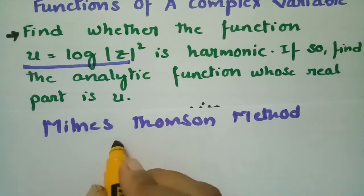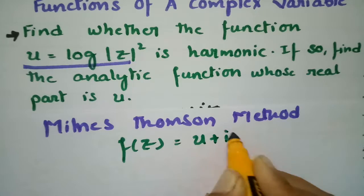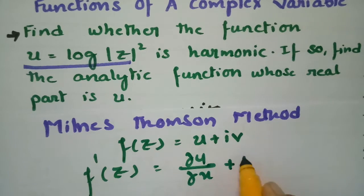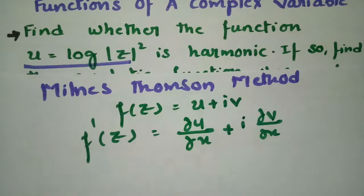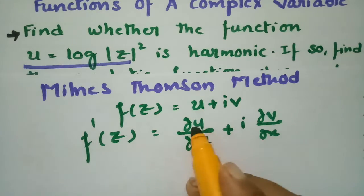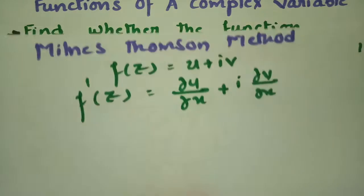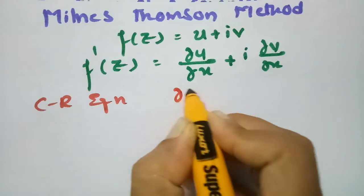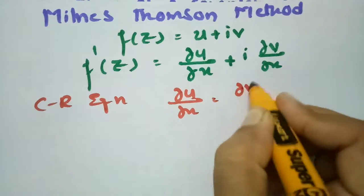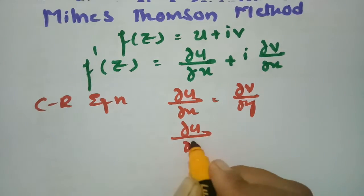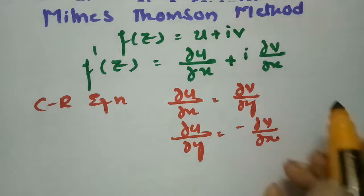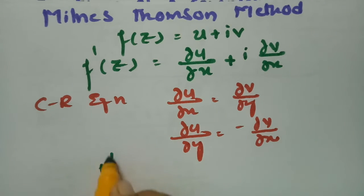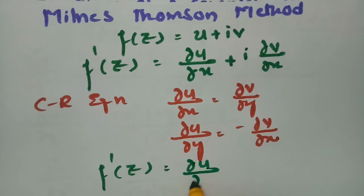According to the Milne-Thomson method, f(z) = u + iv. Taking the derivative with respect to x: f'(z) = ∂u/∂x + i·∂v/∂x. Since only the real part is given, I transform the imaginary part using the Cauchy-Riemann equations: ∂u/∂x = ∂v/∂y and ∂u/∂y = -∂v/∂x. So in place of ∂v/∂x I write -∂u/∂y.